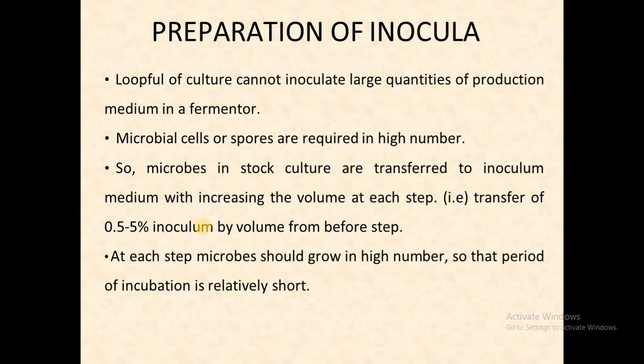For preparation of inoculum, a small culture cannot inoculate large quantities of production medium in a fermenter — microbial cells or spores are required in high numbers in the fermentation tank. So microbes in the stock culture are transferred to the inoculum medium with increasing volume at each step — for example, 100 ml, then 1 liter, then 5 liters — and then transferred to the tank. At each step, microbes should grow in high numbers.